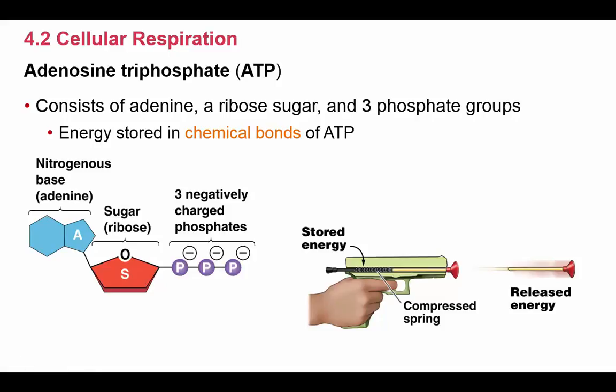The energy between the three phosphates is similar to holding the negative poles of two magnets together — they repel each other, so energy is present. There's energy stored in the three negatively charged phosphates, and as you break the chemical bonds holding them together, that energy is released.